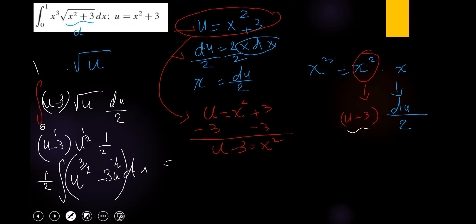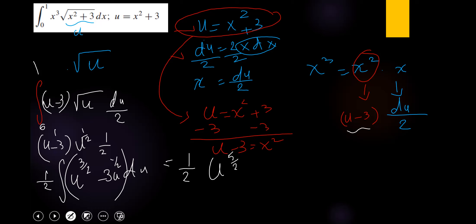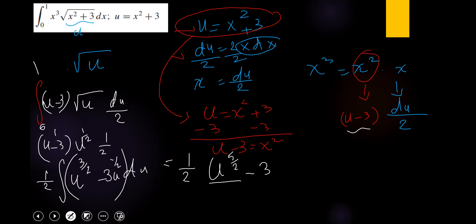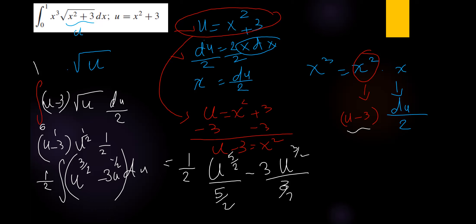Using the distributive property, multiply u to the power one-half by u and by 3. Then integrate to get half of u to the power 5 over 2 divided by 5 over 2, minus 3u to the power 3 over 2 divided by 3 over 2, plus C.